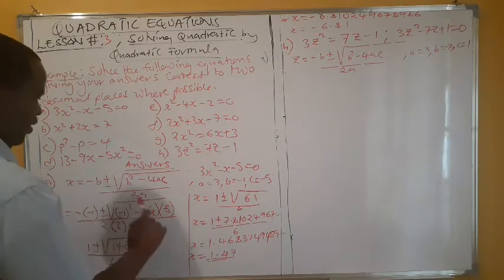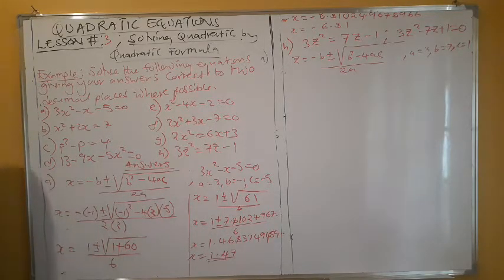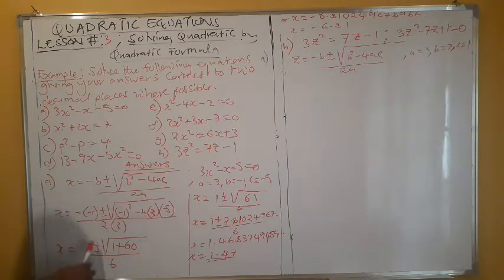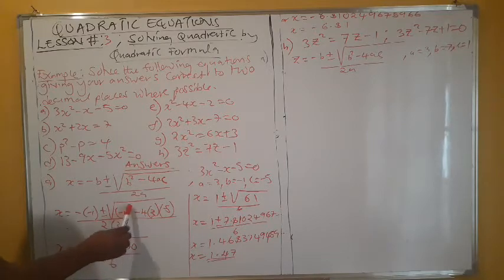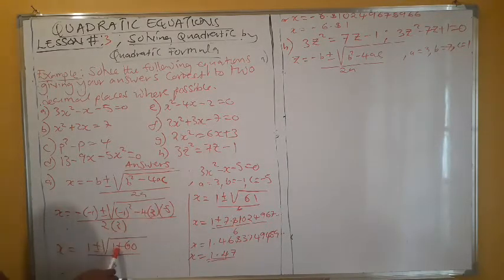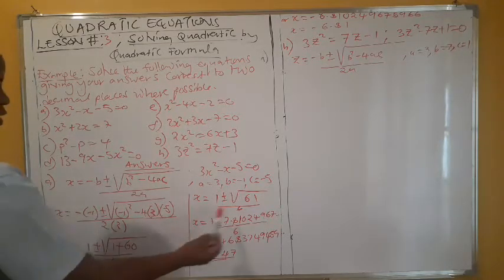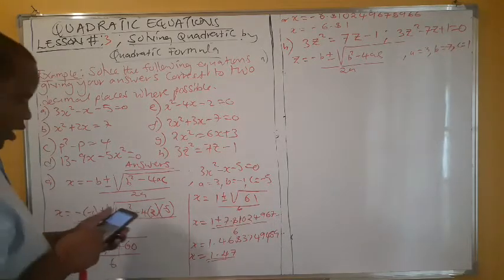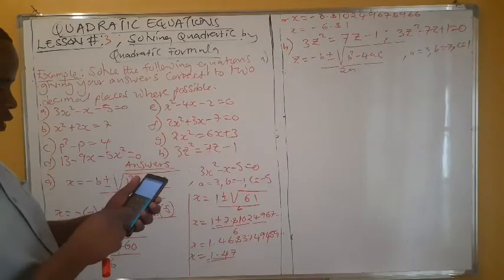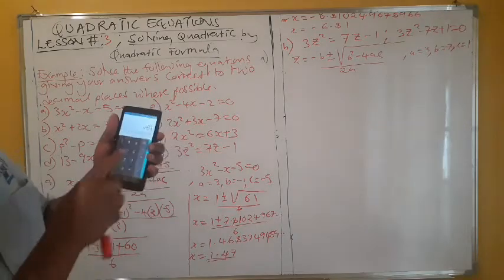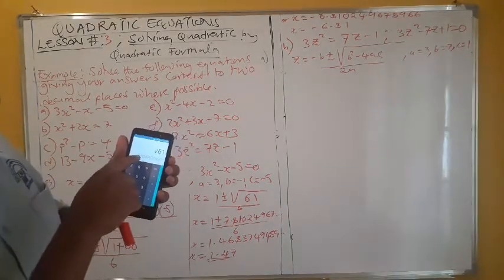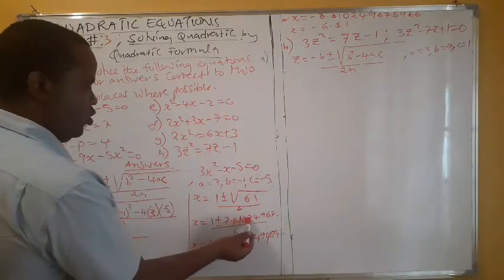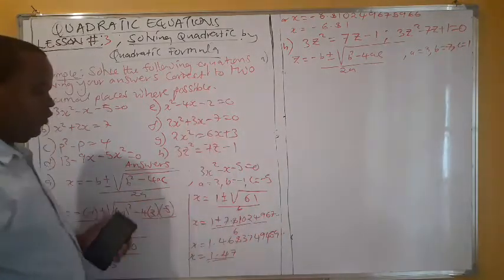You divide everything by 2 times a, which is 2 × 3 = 6. Now punch it into your calculator. Negative times negative gives positive one; (−1)² = 1; then −4 × 3 × (−5) = +60. So under the square root you have 1 + 60 = 61. Therefore x = (1 ± √61) / 6. The square root of 61 is approximately 7.8102496...